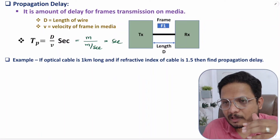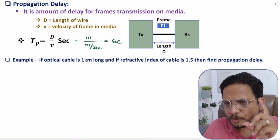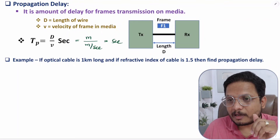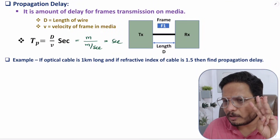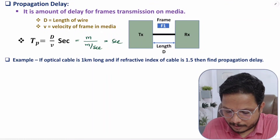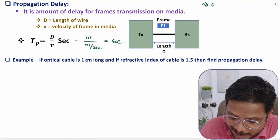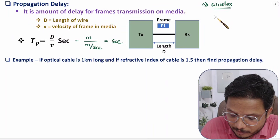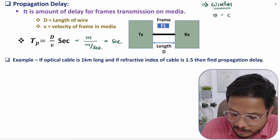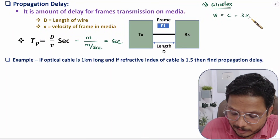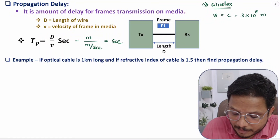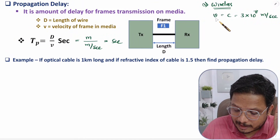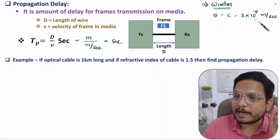Before I solve a problem, there are a few basics you should know regarding calculation of velocity of signal inside a medium. Let me give you examples of three cases. For wireless medium, velocity will be the velocity of light in free space, which is 3 × 10⁸ meters per second. So for wireless medium, velocity of signal is 3 × 10⁸ meters per second.